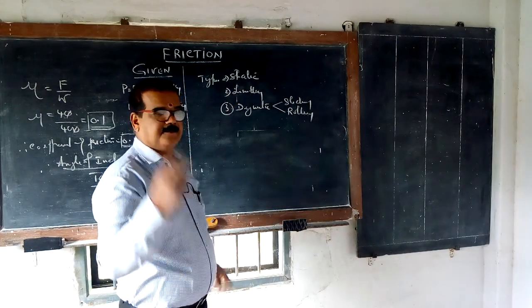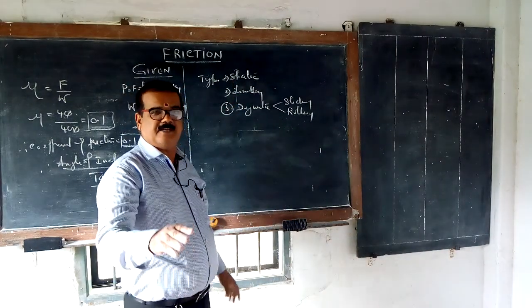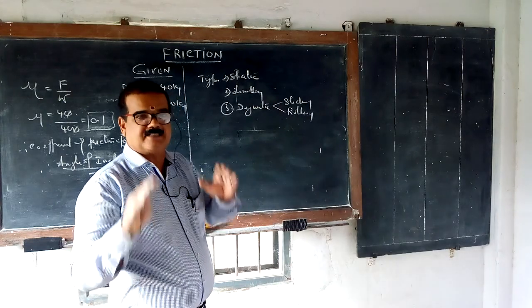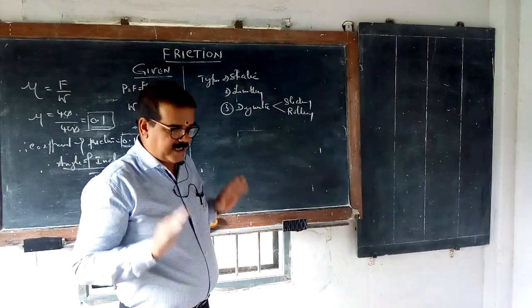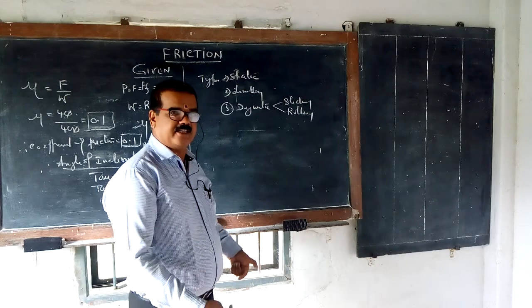Very importantly in friction there are three types. One is called static. Static means without any movement. For example we are sitting on the chair. See I am standing I am not moving. But there is friction in between.